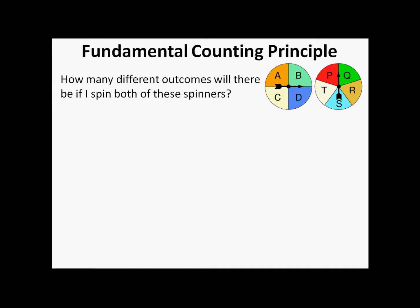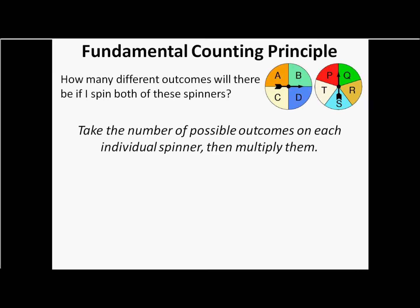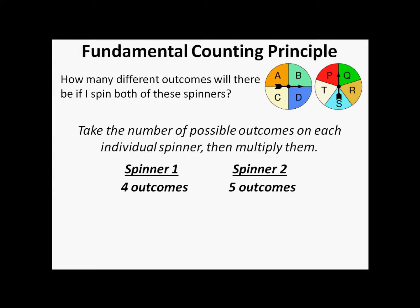We've got how many different outcomes will there be if I spin both spinners? All right, well, you take the number of possible outcomes on each spinner, each individual spinner, and then you multiply them. So on the first spinner, there were four outcomes. On spinner two, there's five outcomes. You just do four times five, 20 different outcomes. That's a lot easier than doing that whole tree, isn't it? You still need to know how to recognize those trees, though. It's important.